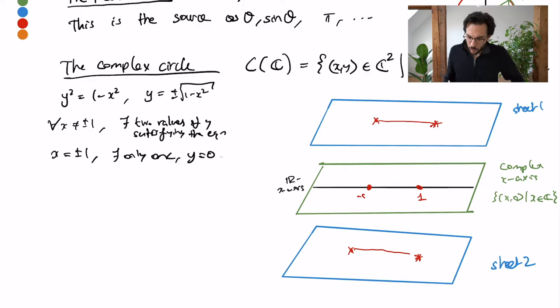For values of x lying between minus 1 and 1, I get these two copies of the interval. But the ends of these two intervals will be glued together and then I get my real circle. But let me delete this real circle for now.